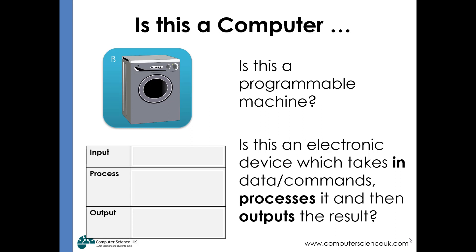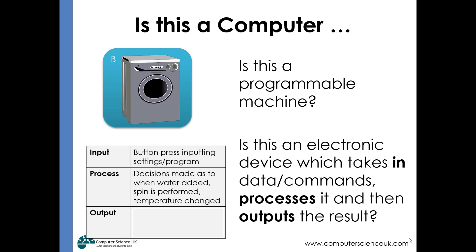Drilling down into exactly what those inputs, processes and outputs might be: one common misconception is that the input is dirty washing and the output is clean washing. When deciding if this is a computer, we need to be more technical. The inputs are buttons being pressed to select settings and programs. The process involves decisions about when to add water, when to spin, and when to change temperature. The outputs on a technical level are valves opening and closing, the heater being turned on and off, and motors being turned on and off. So by definition, a washing machine can be considered a computer — it certainly has a computer on board.